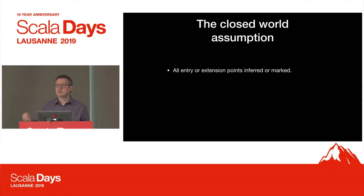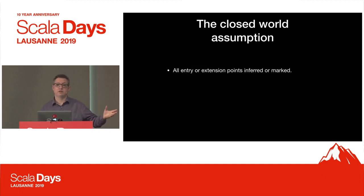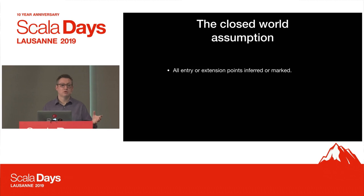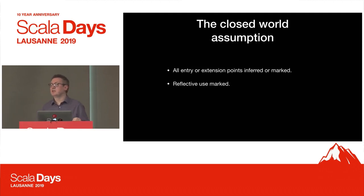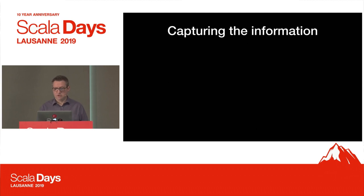Which means you need to find the entry points. The main method is easy. If you're using certain test frameworks, you can use the annotations to find them. If you're writing a library, you're going to have to tell the tool where your entry points are - what are your public APIs? A tool can't automatically detect things like reflection. If I load something reflectively, I can't see it. So if you're going to do that, you're going to need to provide these tools extra information and say this is an entry point.